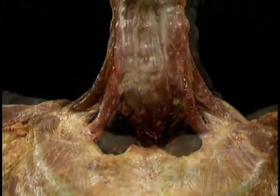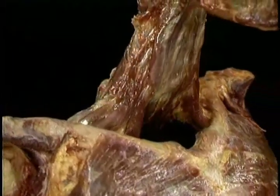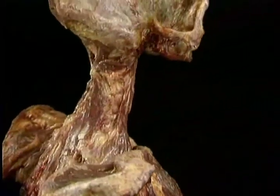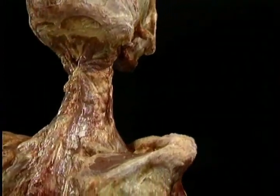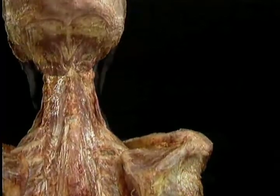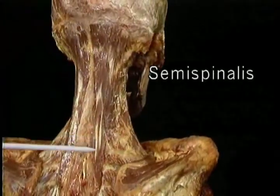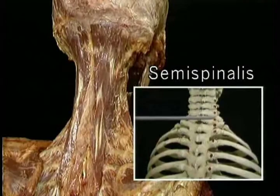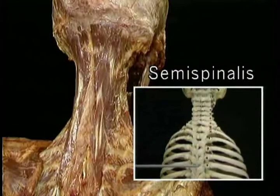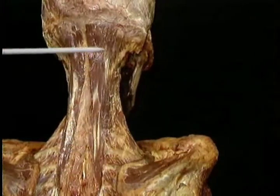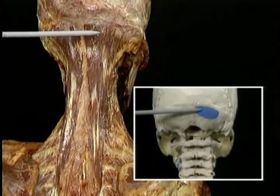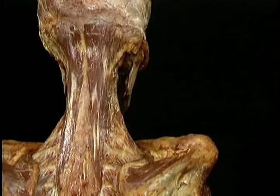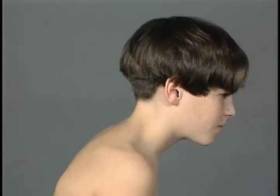Now we'll add the clavicles and scapulae and go around to the back to look at three large muscles that shape the back of the neck: semispinalis, splenius, and trapezius. Here's semispinalis. It arises by many tendons of origin from the articular processes of C4 to C7 and from the transverse processes of T1 to T6. Semispinalis runs almost vertically to insert on the occiput, just behind the two rectus muscles. The action of semispinalis is to extend the head. In addition, when we're upright or leaning forward, the tonic action of semispinalis prevents gravity from flexing the head.